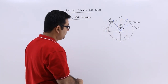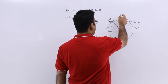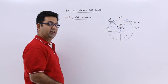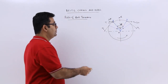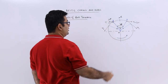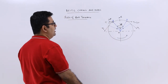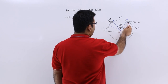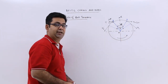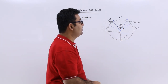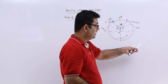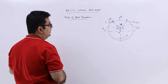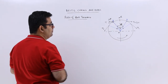Now what happens is you have a normal reaction, capital R. The frictional force would be μR in this direction, and at point A you have a tension T, and at point B you have a tension T plus δT. The reason for T plus δT here is that on this side the tension is more as compared to the left side.